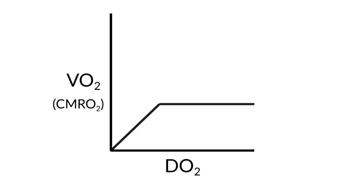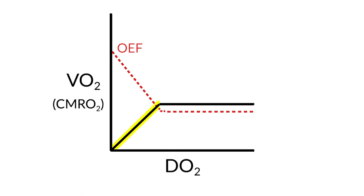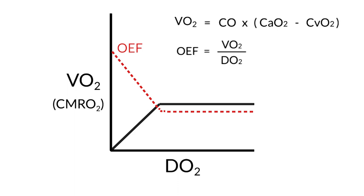There's an additional part of this graph I'd like to point out: we can superimpose the oxygen extraction fraction curve to the delivery versus consumption curve. What you can see from this curve is that as the delivery of oxygen goes down and you're on the supply-dependent portion of the curve, the amount of oxygen that you extract goes up linearly. So what this equation tells you is that if, for example, your cardiac output is impaired and your left ventricle isn't functioning properly, your tissues are going to compensate by consuming more oxygen, increasing your oxygen extraction fraction.